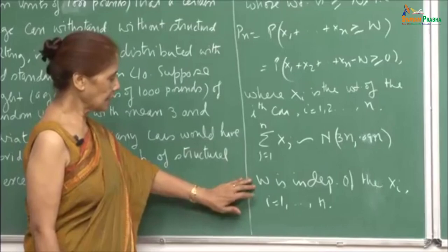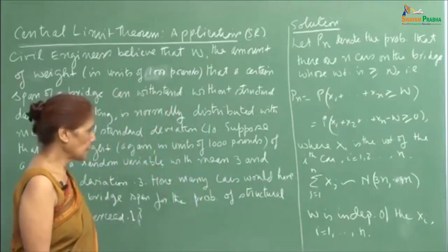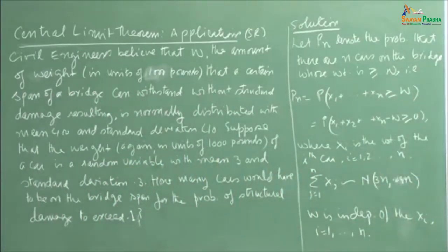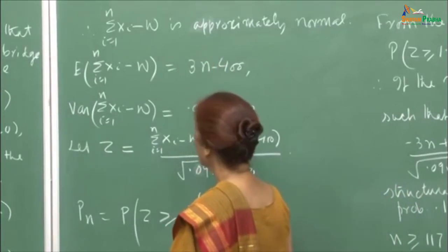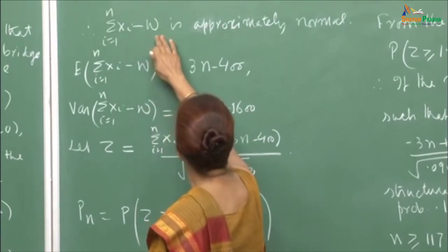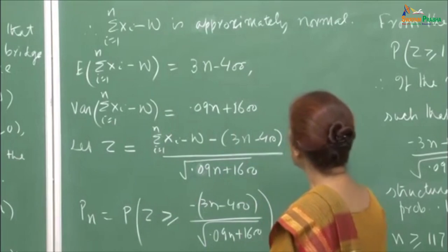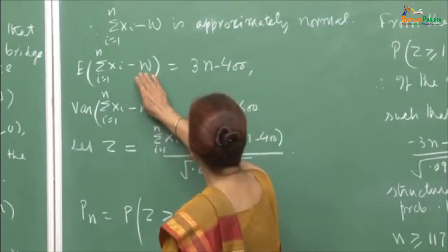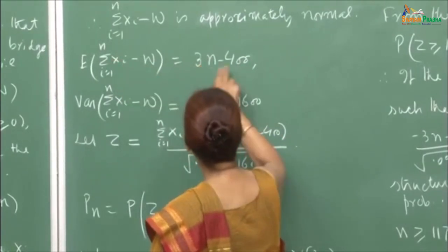W is independent of the Xᵢ's, because the weight the bridge can withstand is independent of the weights of the individual cars. Therefore, ΣXᵢ − W is also approximately normal. The expectation of this normal variate is 3n − 400, since the mean of ΣXᵢ is 3n and the mean of W is 400.